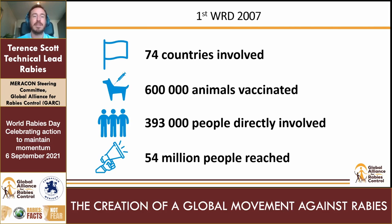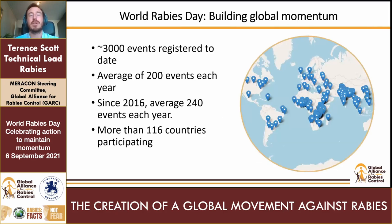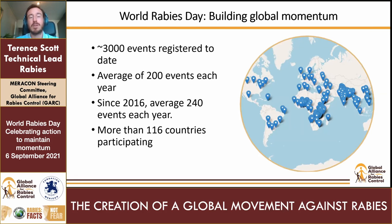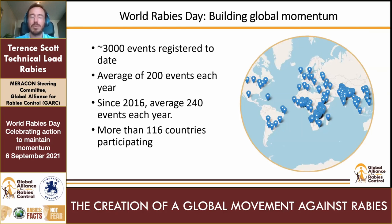That was the start of World Rabies Day in 2007. Since then, part of this webinar is to continue and build that momentum towards the 2030 goal. We've seen more than 3,000 World Rabies Day events registered on the global platform, averaging about 200 events every single year. Since 2016, there has actually been an average of 240 events per year, and that number continues to grow. We hope to see this global community truly coming together, with more than 116 countries participating around the world.